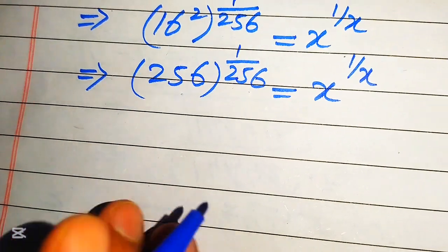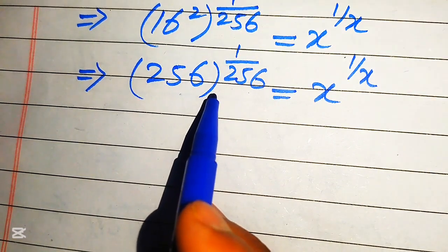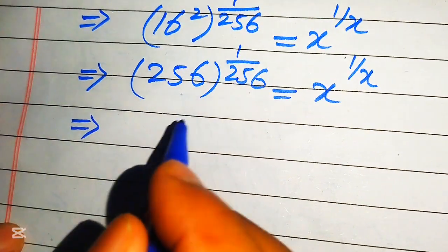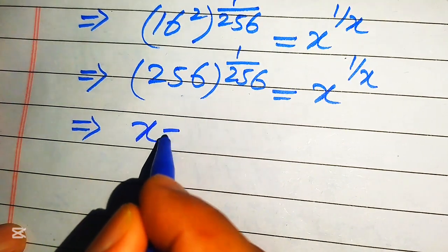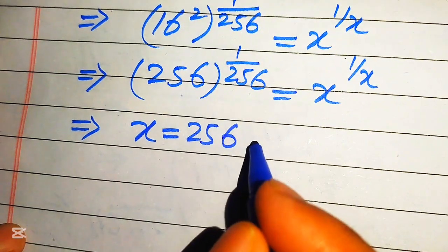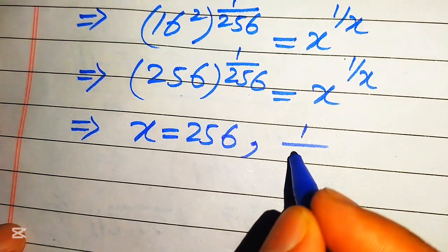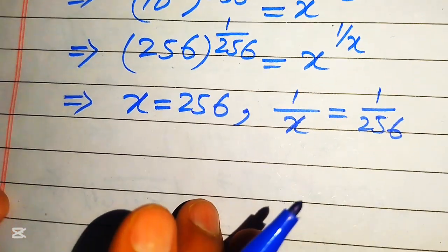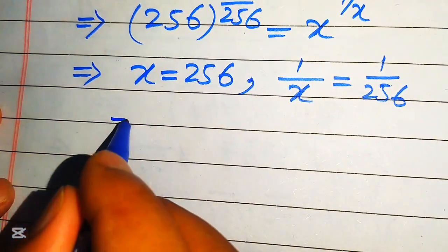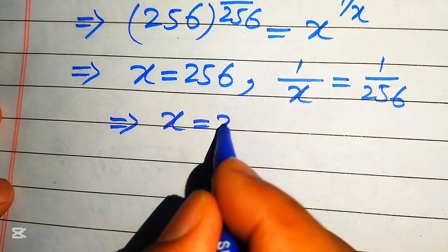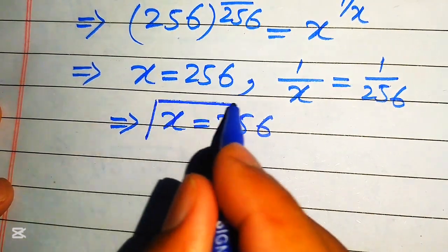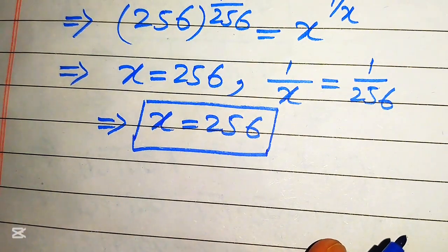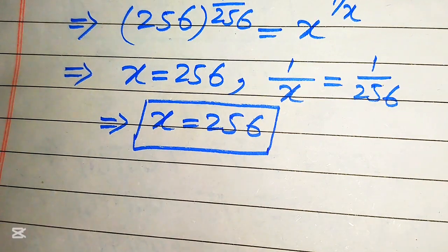Now on both sides the exponent is the reciprocal of the base. Comparing the bases gives x equals 256, and comparing the exponents gives 1 over x equals 1 over 256, again giving x equals 256. So the final answer is x equals 256. Thank you for watching — please subscribe to the channel for more videos.